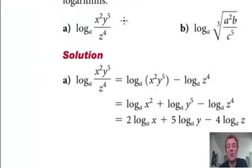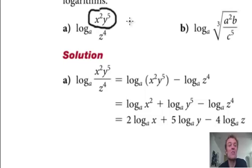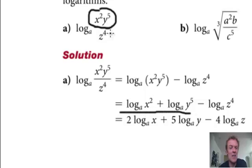I do it a quicker way than what they actually show you in the book. I see these as numerators — the product rule — so it's two separate logs that are being added. So I jump straight to this line. These are on top, so it's like saying these are the positive ones. This one's on the bottom, so it's going to come from the quotient rule, so it's going to have a minus.